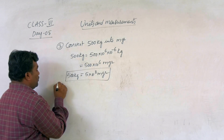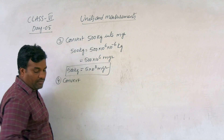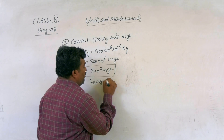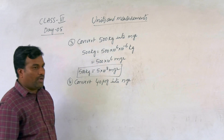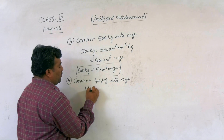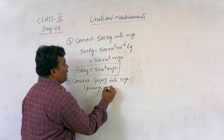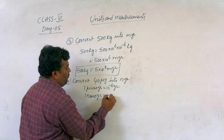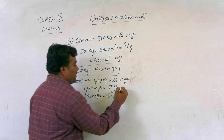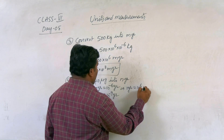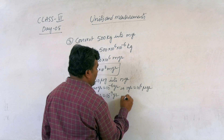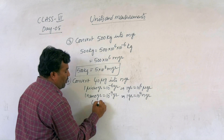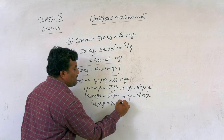Next, fourth question: convert 40 micrograms into nanograms. We write: 1 microgram equals 10 to the power of minus 6 grams, and 1 nanogram equals 10 to the power of minus 9 grams. Equivalently, 1 gram equals 10 to the power of 6 micrograms, and 1 gram equals 10 to the power of 9 nanograms. First, 40 micrograms equals 40 into 10 to the power of minus 6 grams.